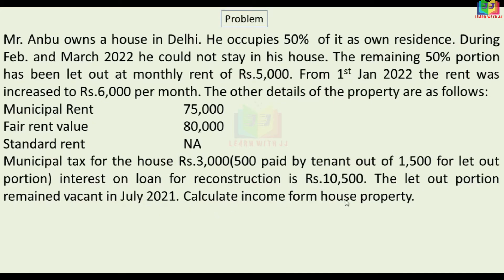Calculate income from house property. Now we see this problem and how much information is available. One house property is in Delhi — Anbu. 50% is own residence and the balance 50% is let out. The let out portion monthly rent is Rs. 5,000 per month. From January 2022, the rent is Rs. 6,000 per month.